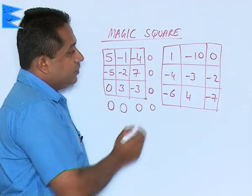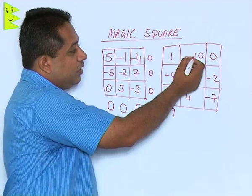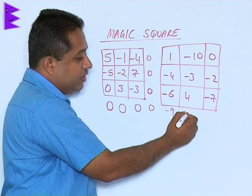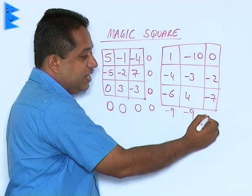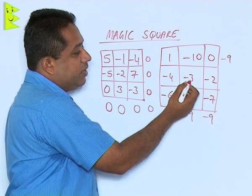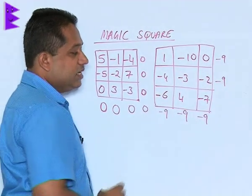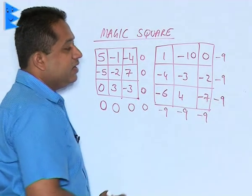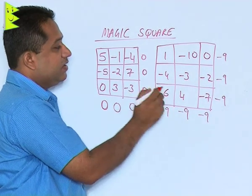Let us look at the next one. 1 minus 4 is minus 3, minus 3 and minus 6 gives us minus 9. The total of the second row: minus 10, minus 3, minus 13; minus 13 plus 4 gives minus 9 again. The third row: 0, minus 2, minus 2 and minus 7 gives minus 9 again. So we get minus 9 in each case. For the columns: 1 minus 10 is minus 9; minus 4, minus 3, minus 2 — adding gives minus 9; minus 6 plus 4 is minus 2, minus 2 and minus 7 gives minus 9. So whenever we add the rows, columns, and diagonals and the answer is the same in each case, we can say it is an example of a magic square.